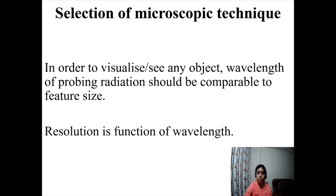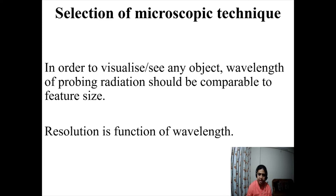Now, this is very important: how to select a microscopic technique. The first thing is that we must be familiar with the dimension of our object. Depending upon the dimension of the object, we select our technique. Suppose it has dimensions on the order of micrometers — then even an optical microscope is well enough. But if the material is on the nanometer scale, then we have to go for the electron microscope.